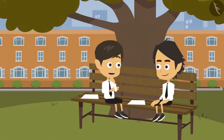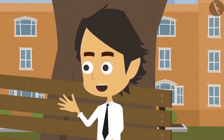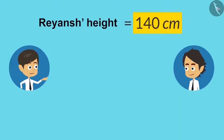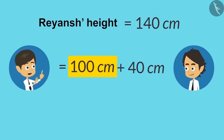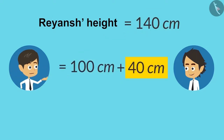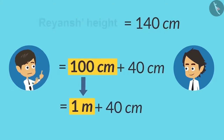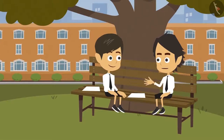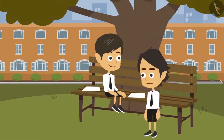Now I can also write my height by converting it into meters. My height is 140 centimeters, so I can write it as 100 centimeters plus 40 centimeters. Now I can write this 100 centimeters as 1 meter. Therefore, my height is 1 meter 40 centimeters. The form has been filled. Let's give it to the teacher.